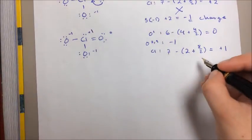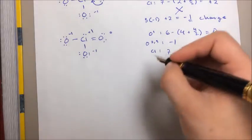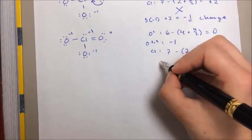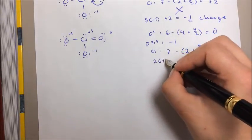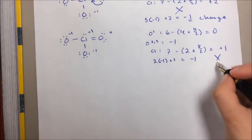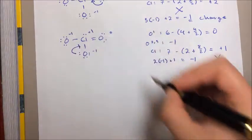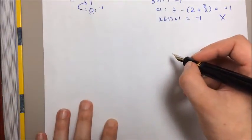And while that's better, it's still not as low as we can go. And we still have the overall adding up to minus one. So you've got 2 times minus 1 plus 1. That still equals minus one. But the formal charges could still be reduced more. Let's see what happens if we make another chlorine-oxygen double bond.